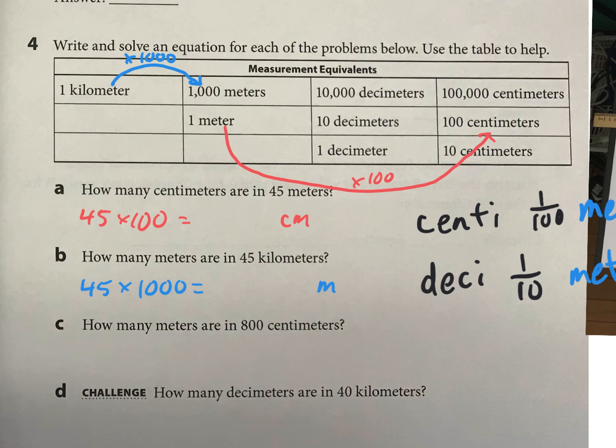And then, the next we're doing how many meters are in 800 centimeters. So, to go from 100 centimeters to 1 meter, what could we do? 100 divided by 100 equals 1 meter. So, here, you need to do 800 divided by 100 to get that part.